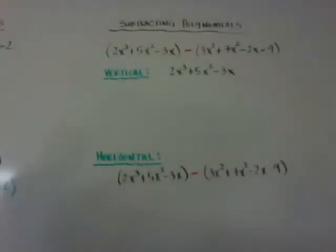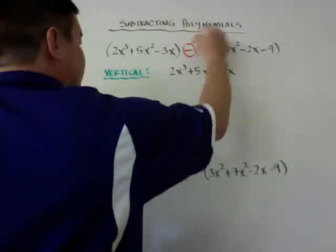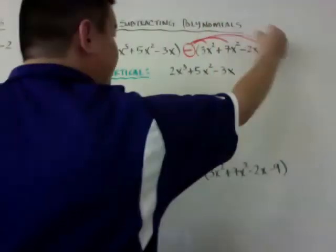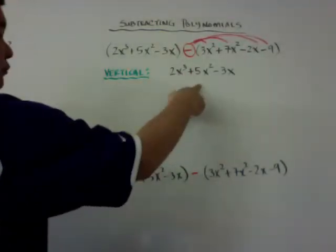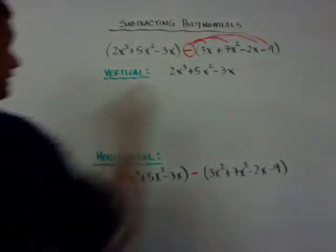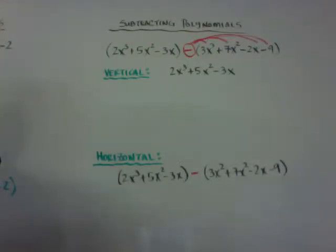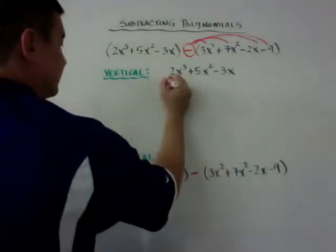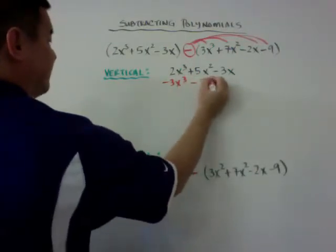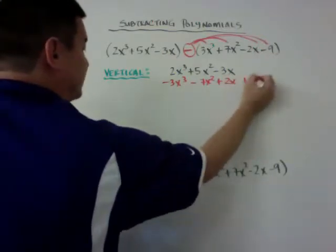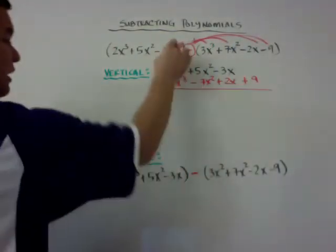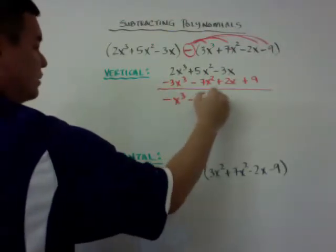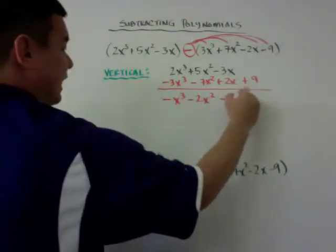The subtracting one is important — when you have a minus with parentheses, you have to distribute the negative. Think of it as negative 1 if you want to. So when you line them up, line up the like terms. I'm going to put minus 3x³ minus 7x² — because I'm distributing the negative — plus 2x, and then plus 9. You can see I line up all my like terms in order, and there's nothing with the 9 so it just goes by itself. When I add it up, I get negative x³ minus 2x² minus x plus 9.